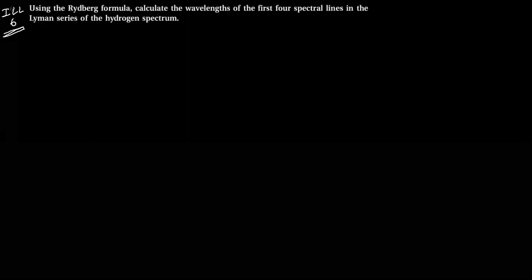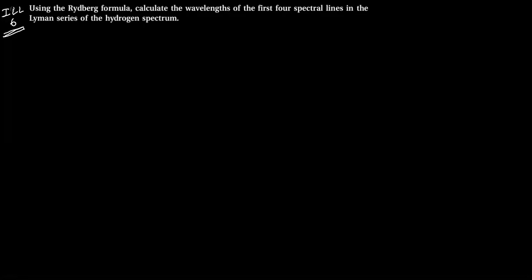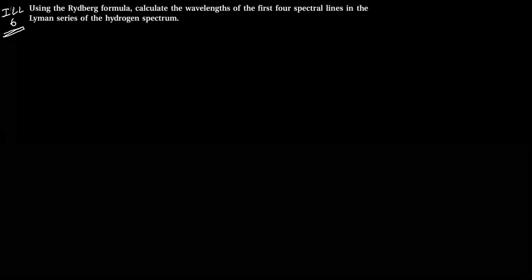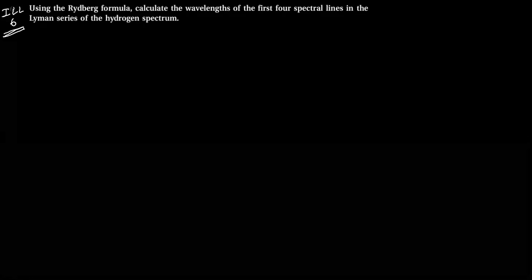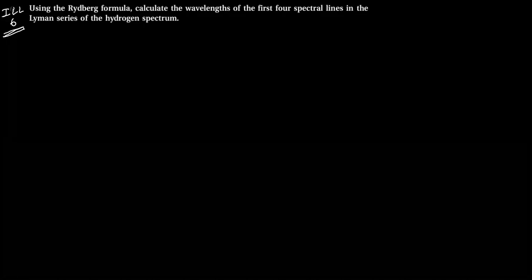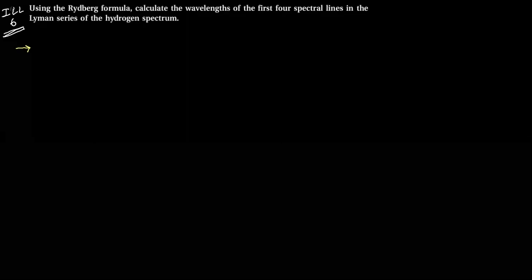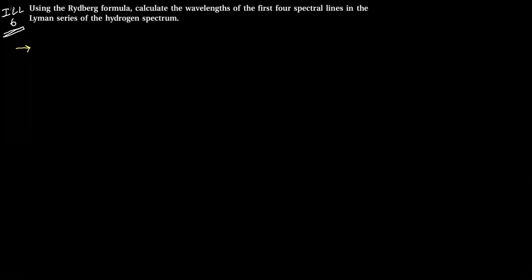Standard 12, Chapter 12, Illustration number 6. Using the Rydberg formula, calculate the wavelength of the first four spectral lines in the Lyman series. We need to find the wavelength of the first four spectral lines in the hydrogen spectrum.